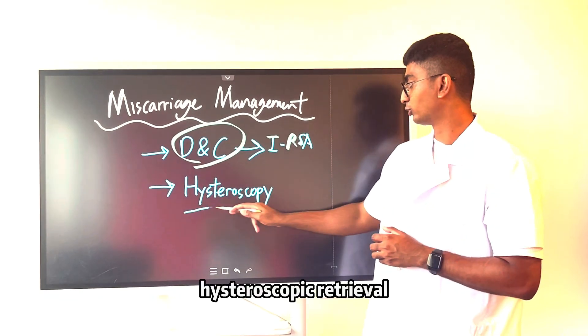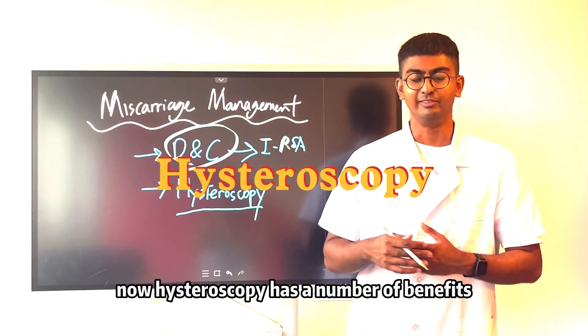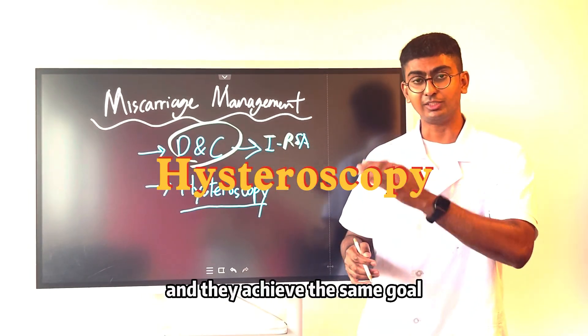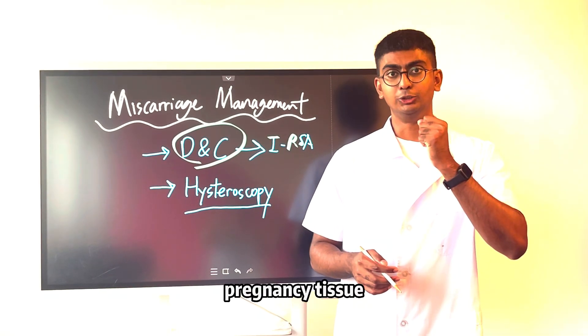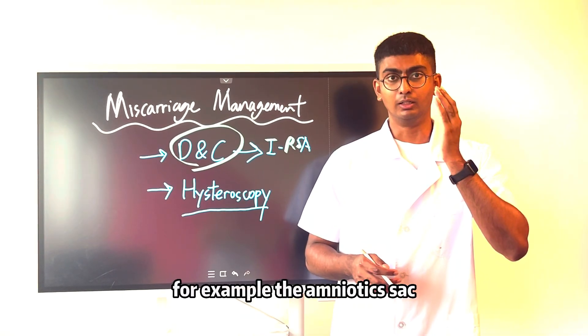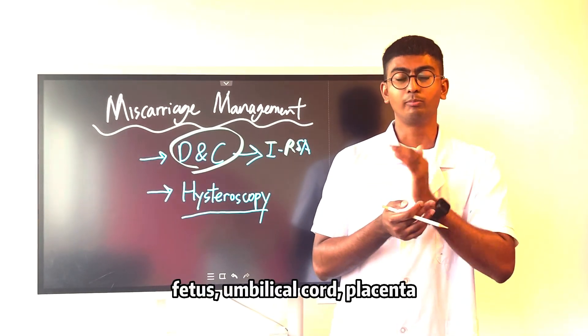Hysteroscopy has a number of benefits compared to D&C and they achieve the same goal, which is retrieving the pregnancy tissue. For example, the amniotic sac, the fetus, umbilical cord, placenta.